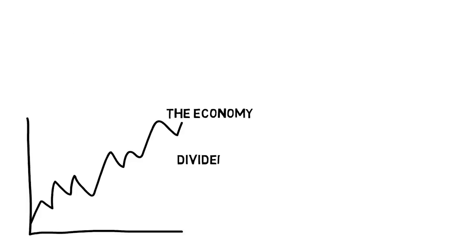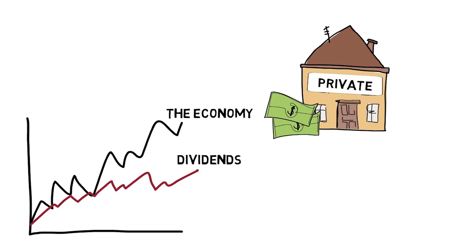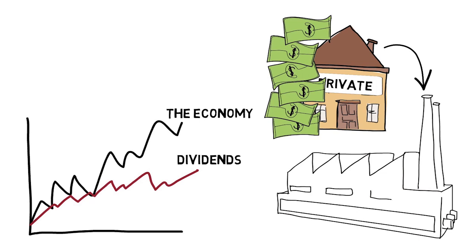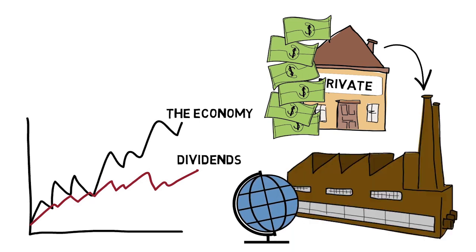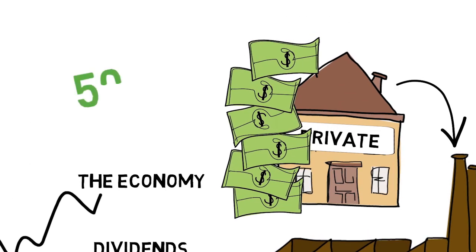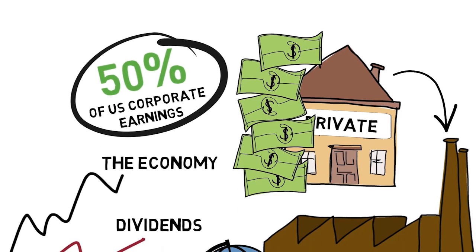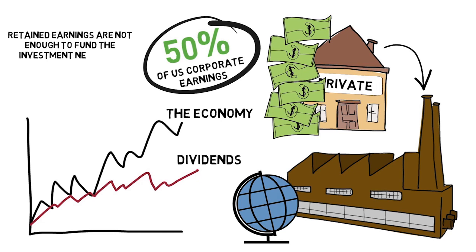So why have dividends grown at roughly half the rate of growth in the economy? One reason is that private companies account for a lot of the growth in corporate earnings, and we don't get to invest in those private companies often until they're big and go public. Privately held businesses account for roughly half of US corporate earnings. Another possible explanation is that retained earnings are not quite enough to fund the investment needed to keep up with GDP growth.